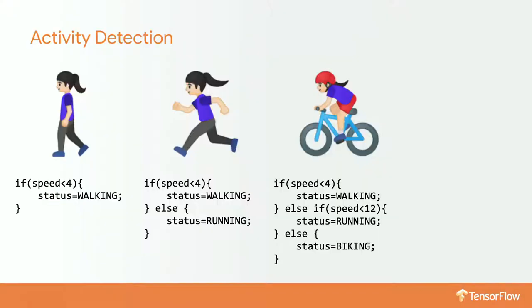I'll also talk about what deep learning is and give an idea of why we're talking about it right now. If you look at 2012, there was a competition which showed that GPUs — graphical processing units that people used to game — came into play and helped in solving most of the problems. It actually made sure that the challenge was won with a deep learning algorithm.